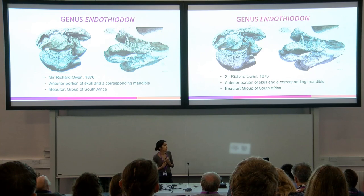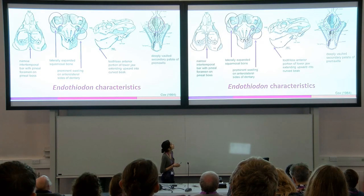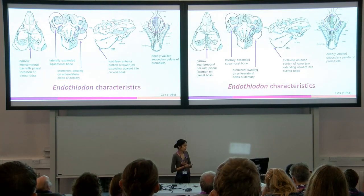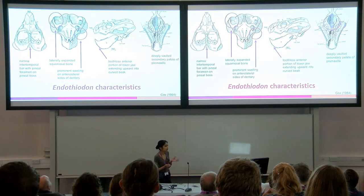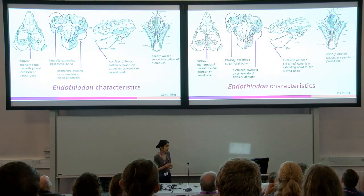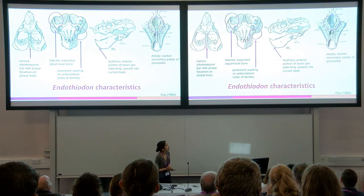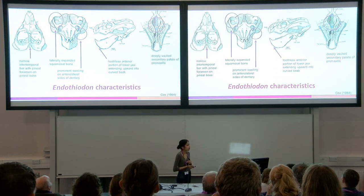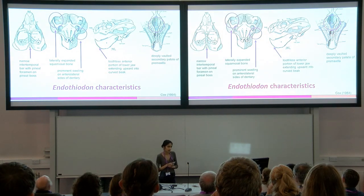That diagnostic feature entails rows of internal upper and lower teeth. The cranial characteristics of Endothiodon are a narrow intertemporal bar with a pineal foramen often on a raised pineal boss, the laterally expanded squamosal bone, a prominent swelling on the anterolateral side of the dentary, a toothless anterior portion of the lower jaw that extends upward into a curved beak, and a deeply vaulted secondary palate of the premaxilla.